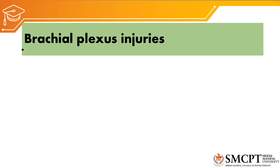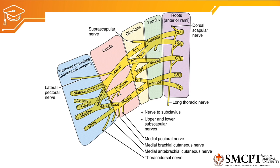In this class we'll discuss brachial plexus injury. Before understanding the levels of injury, we will refresh our anatomy. The brachial plexus is formed by C5, C6, C7, C8, and T1 nerve roots. C5 and C6 combine to form the superior or upper trunk, C7 forms the middle trunk, and C8 and T1 form the inferior trunk.